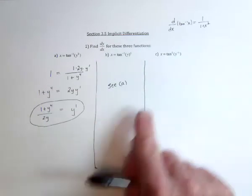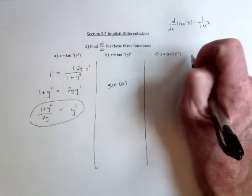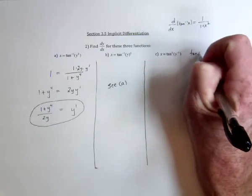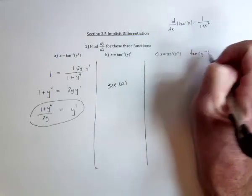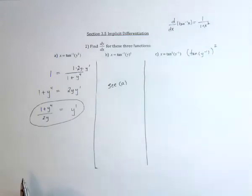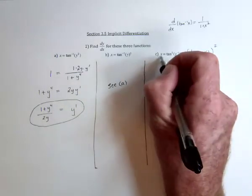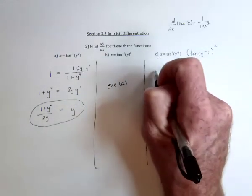And then with this one, it's saying that the tangent is squared. So this is saying you've got tangent of y inverse and all of that is being squared. So the outermost function is the squaring function, so take the derivative of that first of all. Again, the derivative on this side is going to be 1.